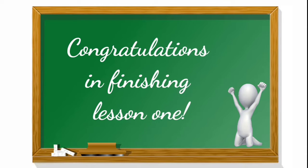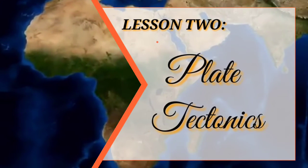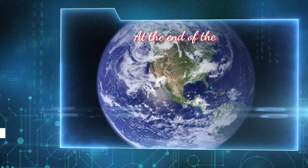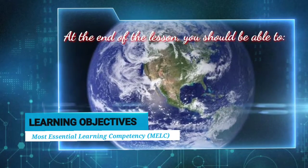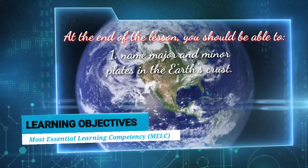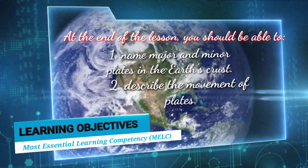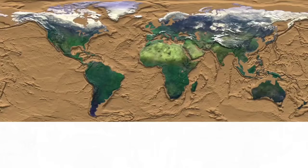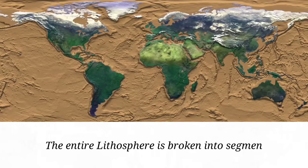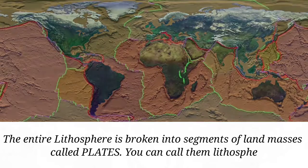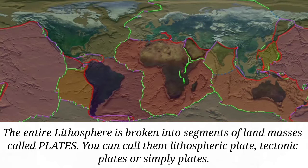Congratulations on finishing Lesson 1. Now let's start with Lesson 2: Plate Tectonics. At the end of the lesson, you should be able to, first, name major and minor plates in the Earth's crust, and second, describe the movement of plates. The Earth's entire lithosphere is broken into segments of land masses called plates. As you can see in the map, you can call them lithospheric plates, tectonic plates, or simply plates.